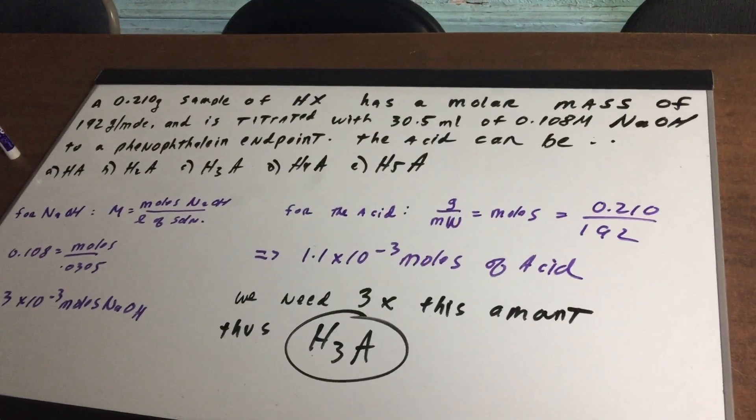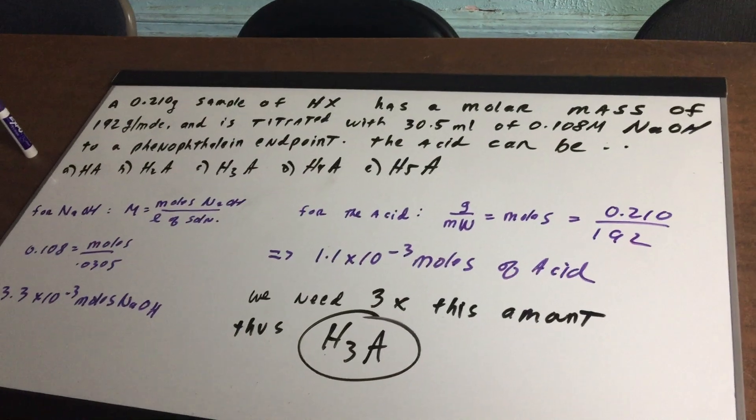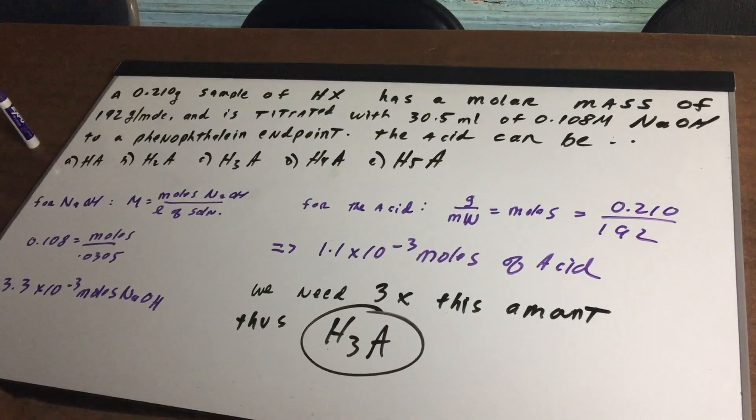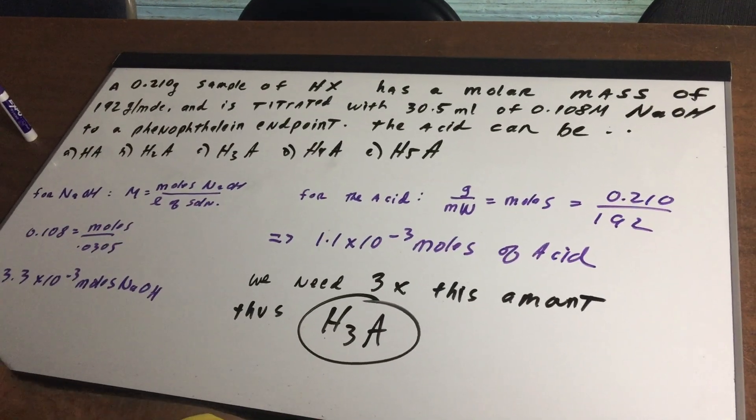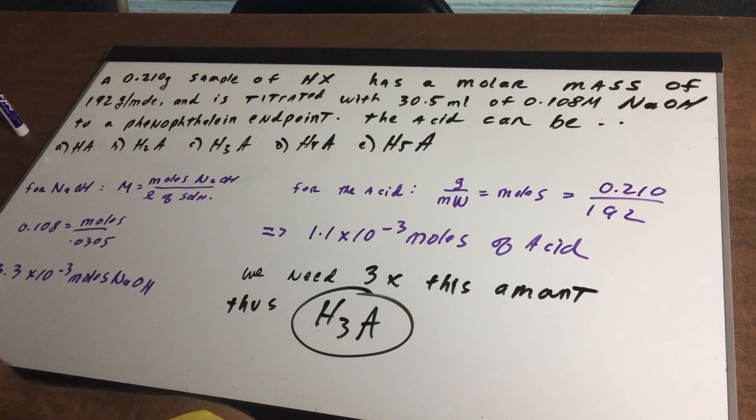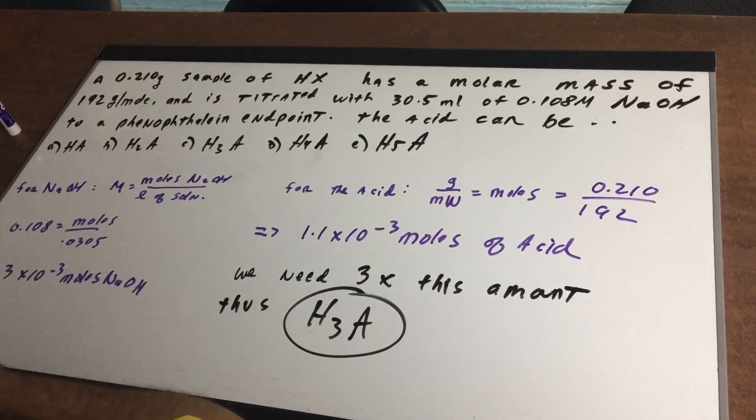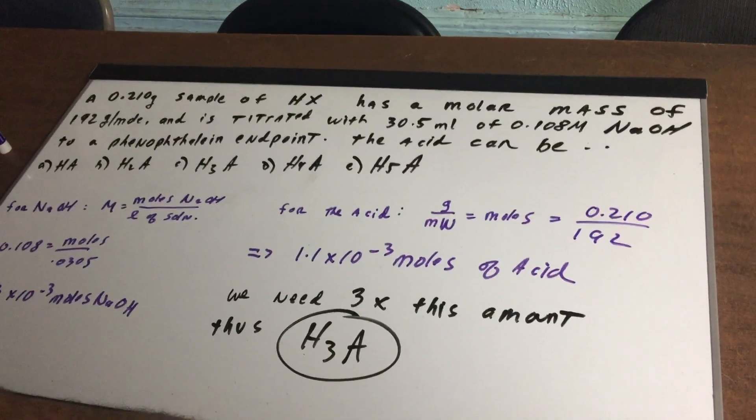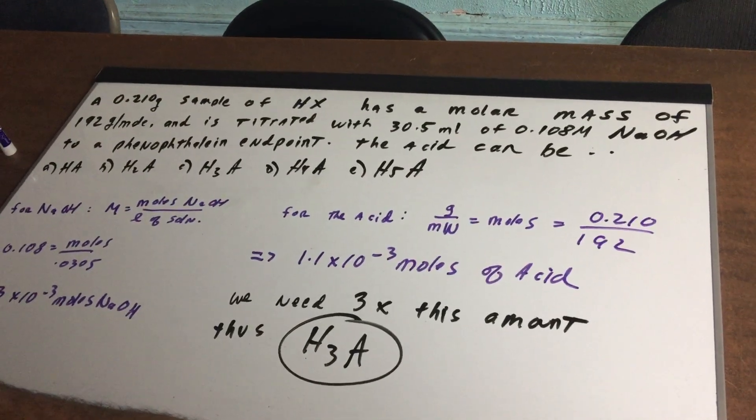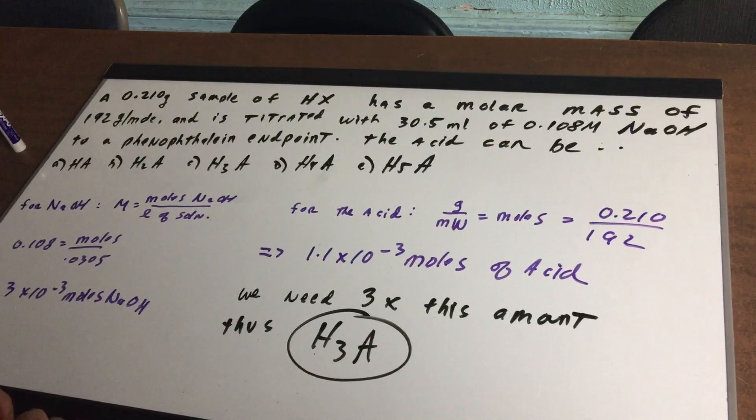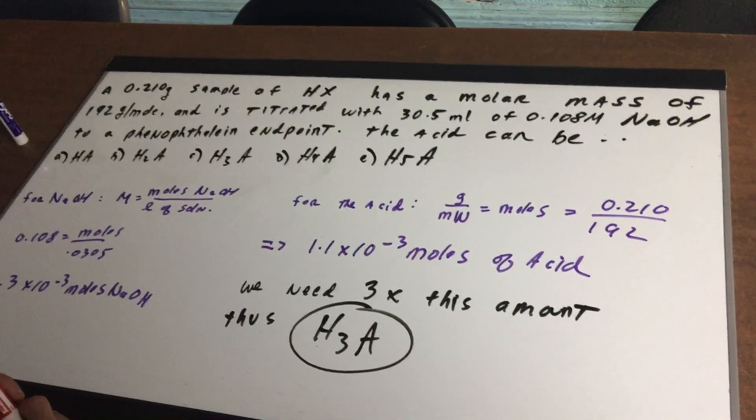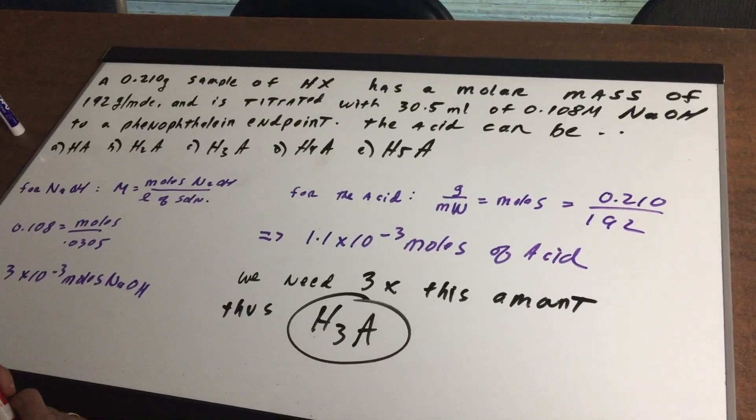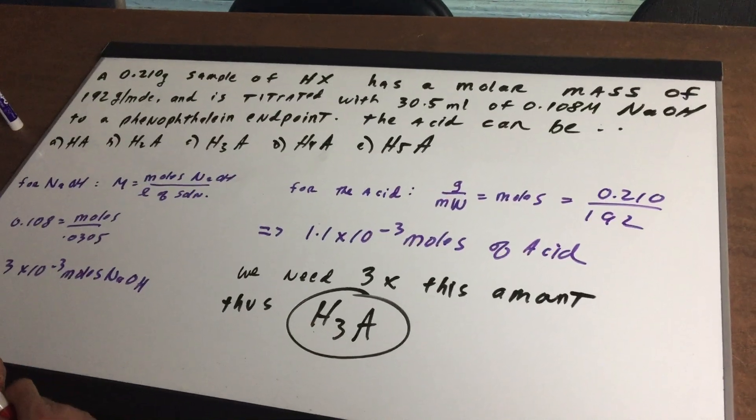you're going to be very interested to see this. I give you a 0.210 gram sample of HX, which is an unknown acid, and it has a molar mass of 192 grams per mole. And it is going to be titrated with 30.5 milliliters of 0.108 molar NaOH to a phenolphthalein endpoint.